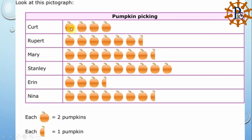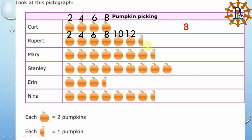We need to find the value for each row. Since each full picture equals two, we count by twos. For example: 2, 4, 6, 8 — so the value is 8. In another row: 2, 4, 6, 8, 10, 12 — but there is also a half picture, so instead of 14 we write 13. A half picture adds only 1.